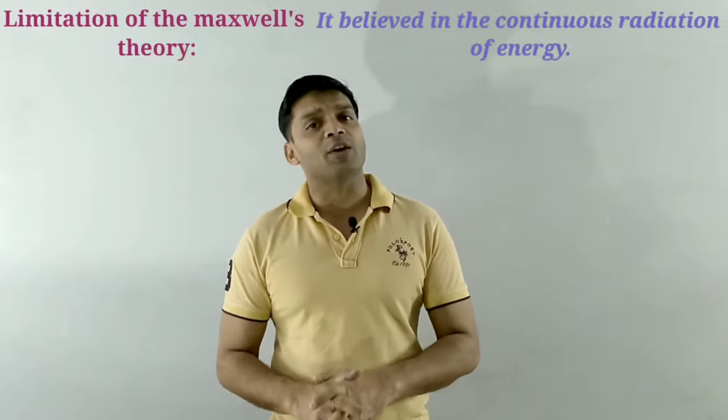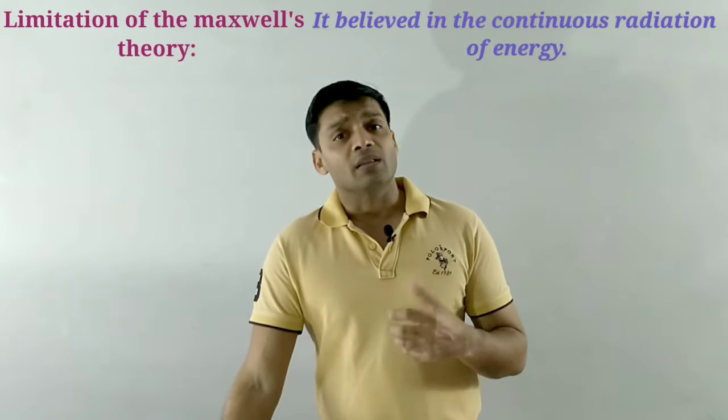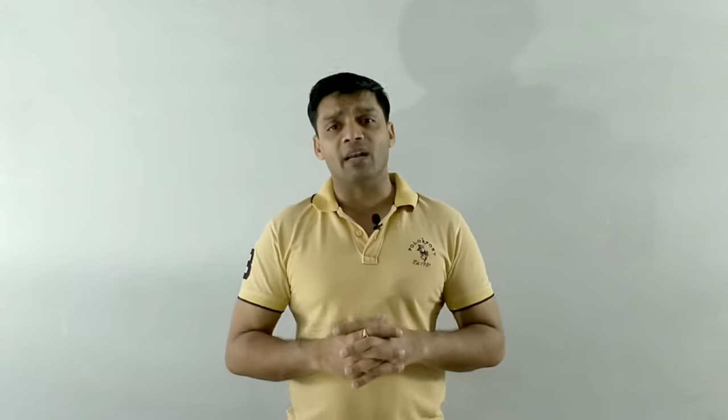Although Maxwell's theory was correct, it had an important limitation. The most important limitation of Maxwell's electromagnetic theory was that it believed in the continuous radiation of energy — that radiant energy is continuously released from infinitely small to infinitely large amounts. It was this idea of continuous radiation of energy which actually failed to explain two very important concepts: black body radiation and the photoelectric effect. In today's video lecture we are going to discuss these two concepts which the classical wave theory was unable to explain.